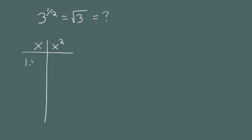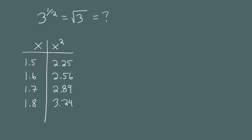Let's make a table of guesses and their squares to see how close we get to 3. If you square 1.5 you get 2.25 — too small. Square 1.6 gives 2.56 — closer, still too small. Square 1.7 gives 2.89 — still too small but getting closer. Square 1.8 gives 3.24 — too big. So the square root of 3 is between 1.7 and 1.8. We now know the first two digits are 1.7, so let's find the next digit.